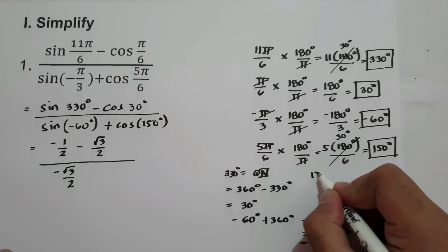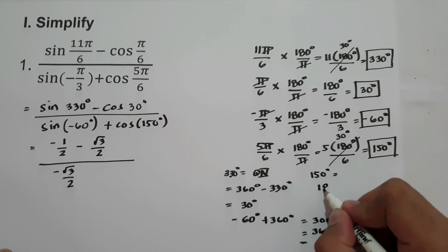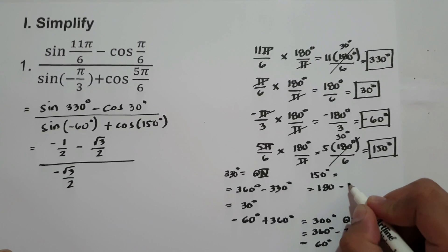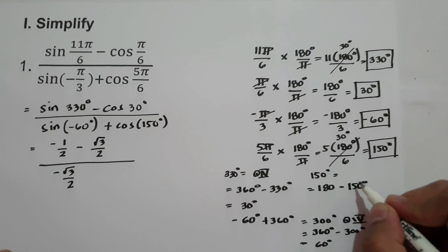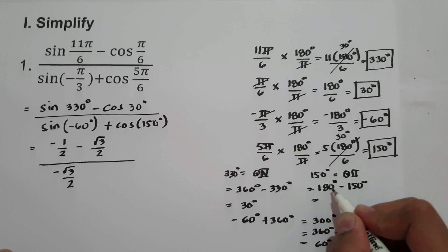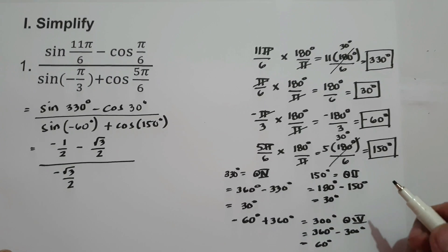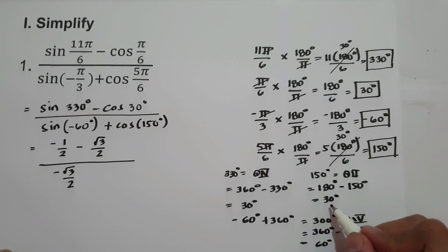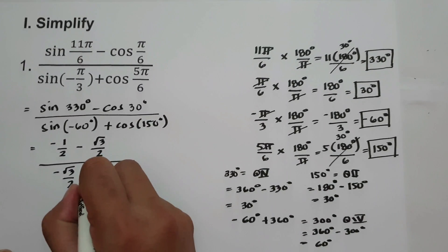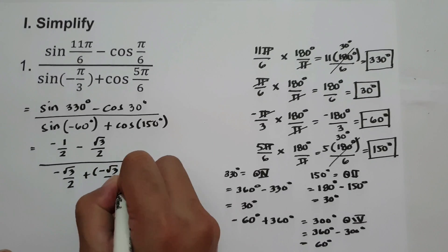The reference angle of 150 degrees is 180 minus 150, which is 30 degrees, and 150 degrees is located in quadrant 2. Cosine 30 degrees in quadrant 2 is negative square root of 3 over 2.